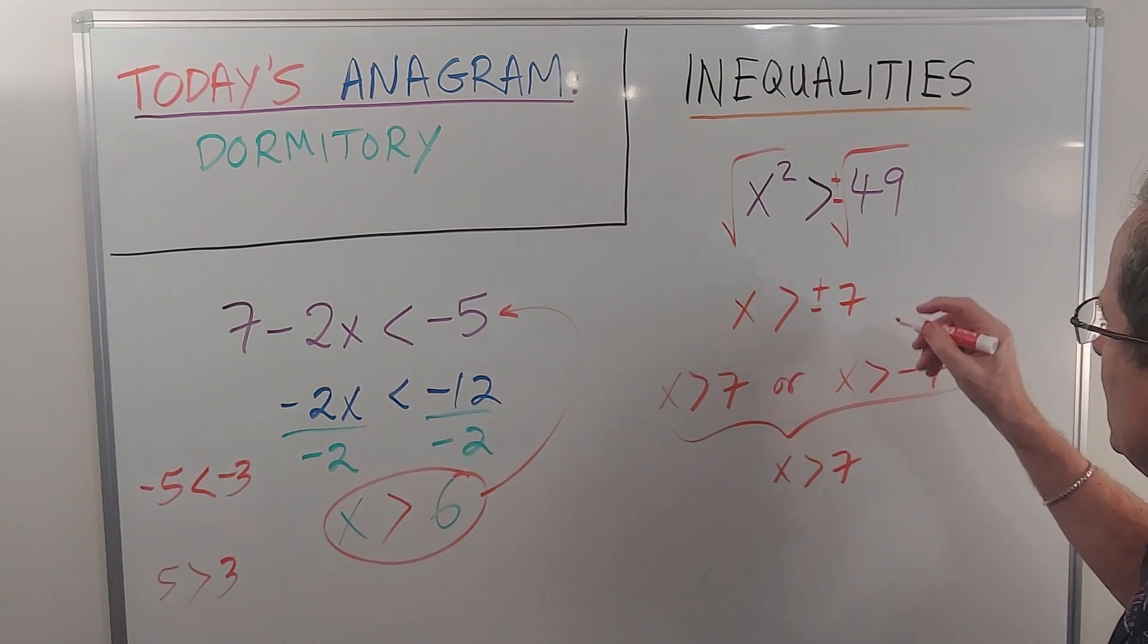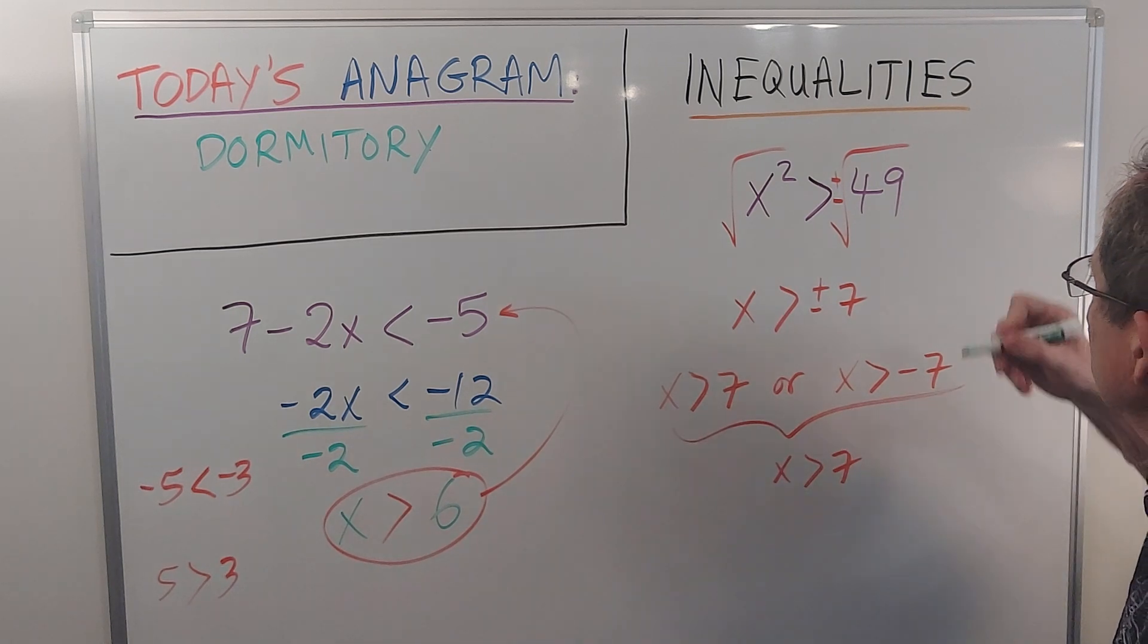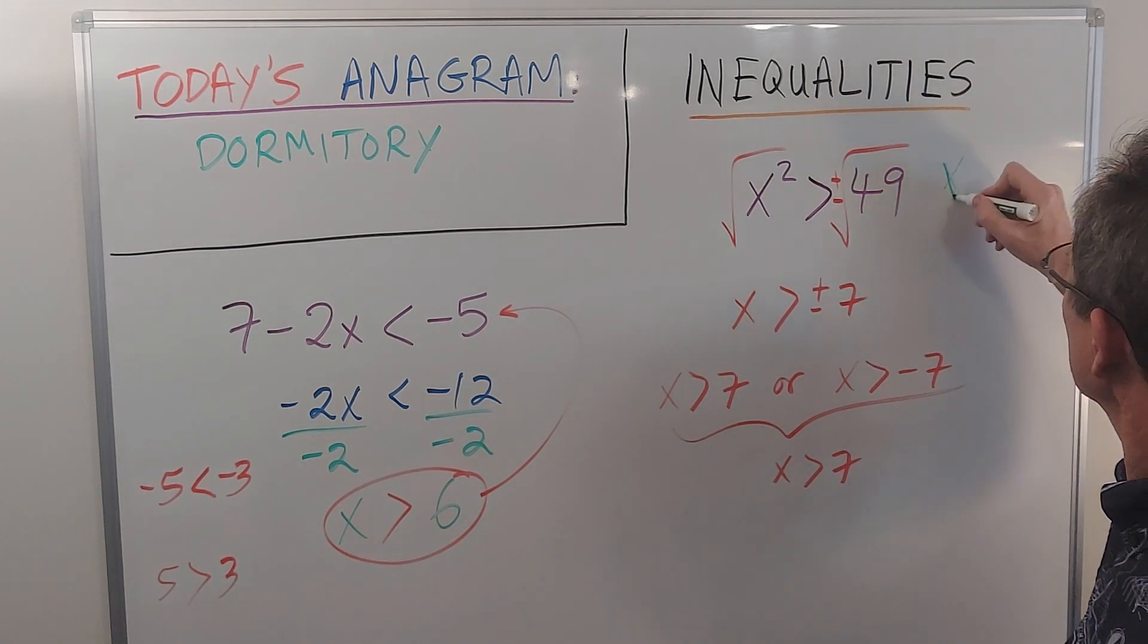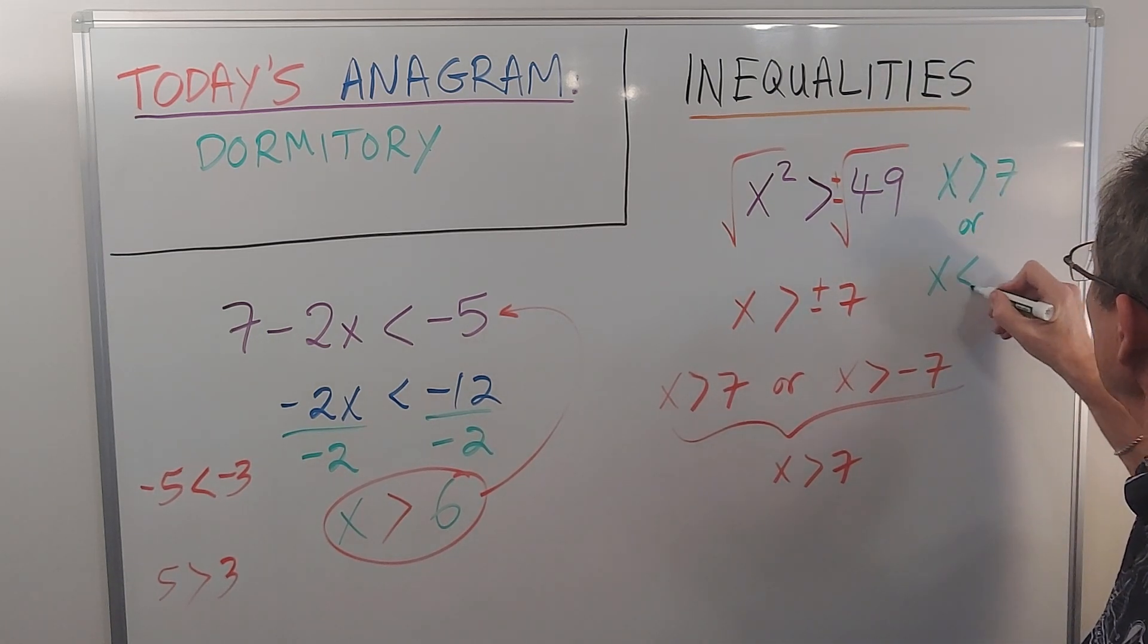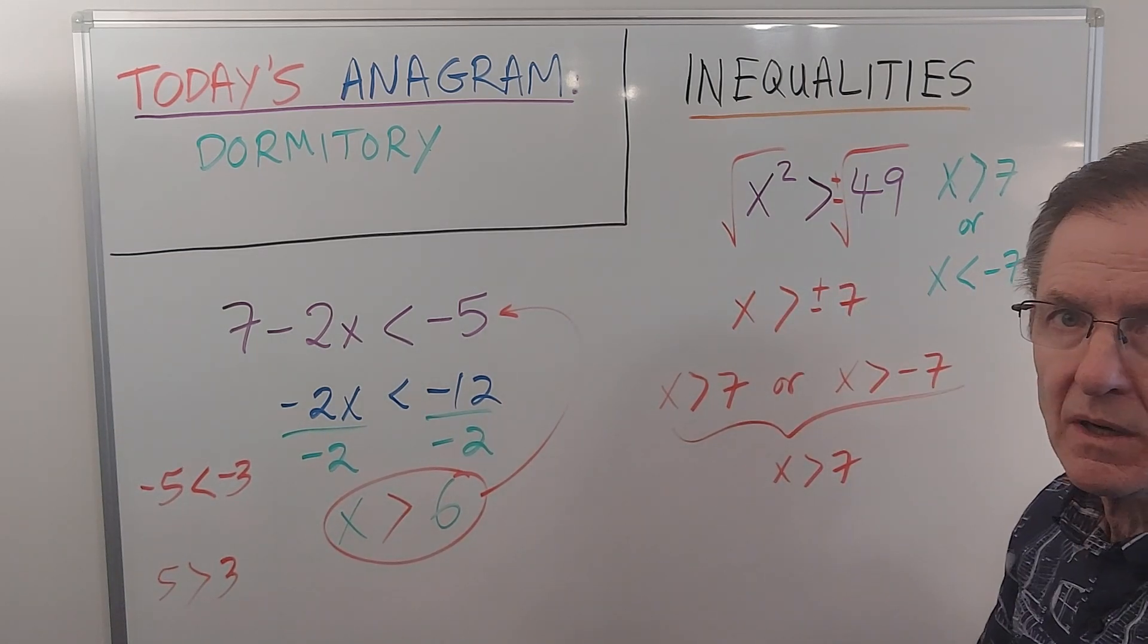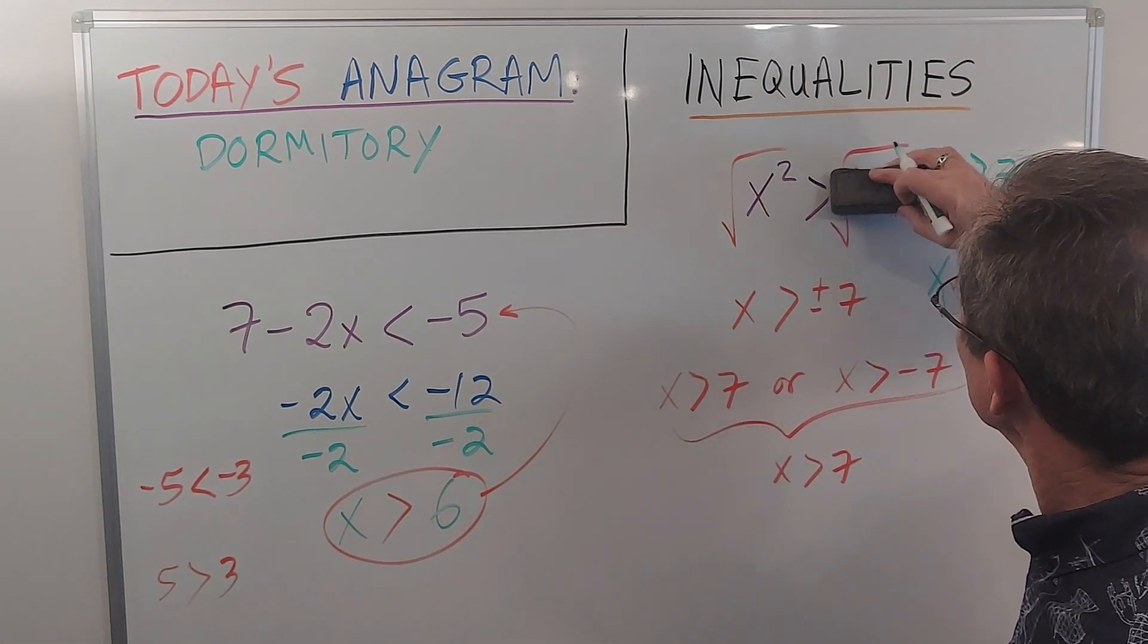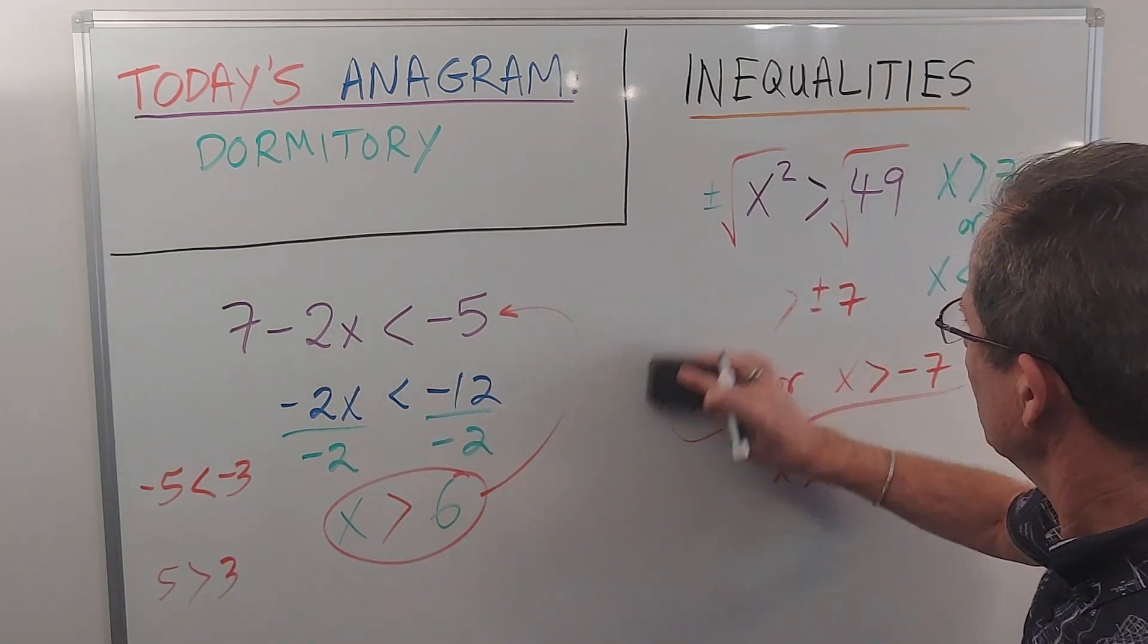However, common sense will tell you that the proper solution is x greater than 7, or x less than negative 7. So putting the plus or minus there doesn't work. Let's redo it and put the plus or minus on this side. Let's see what we get.